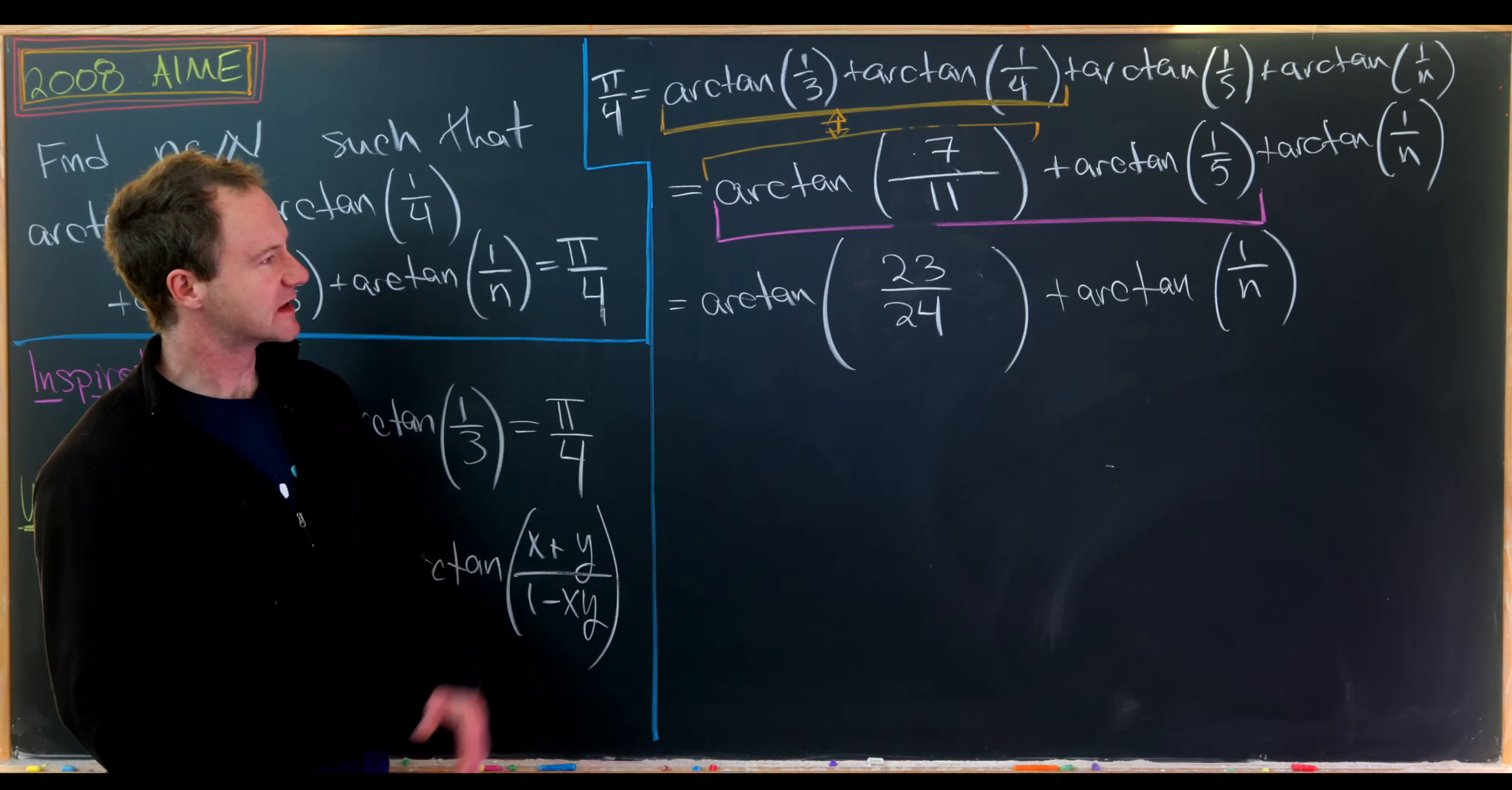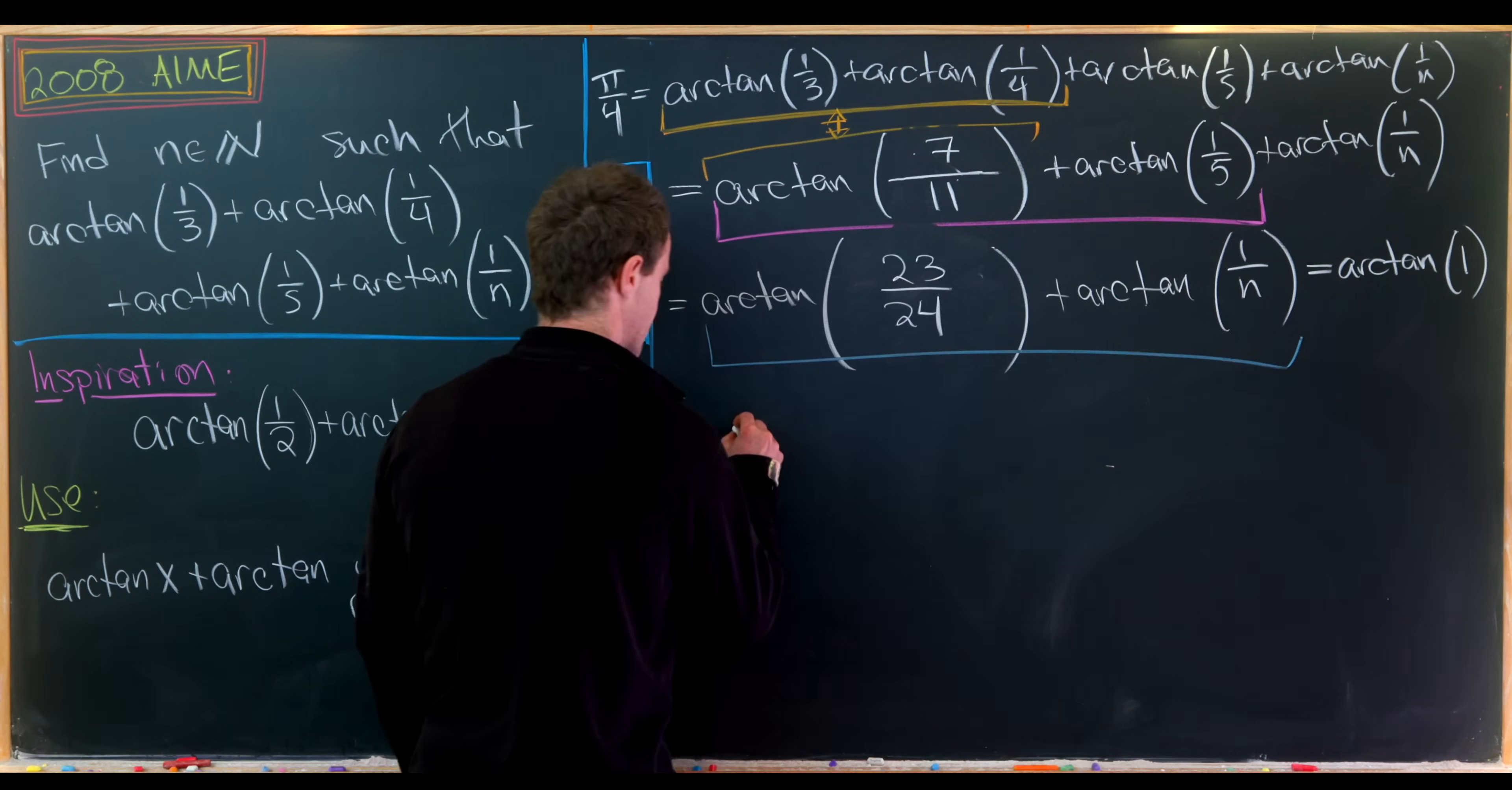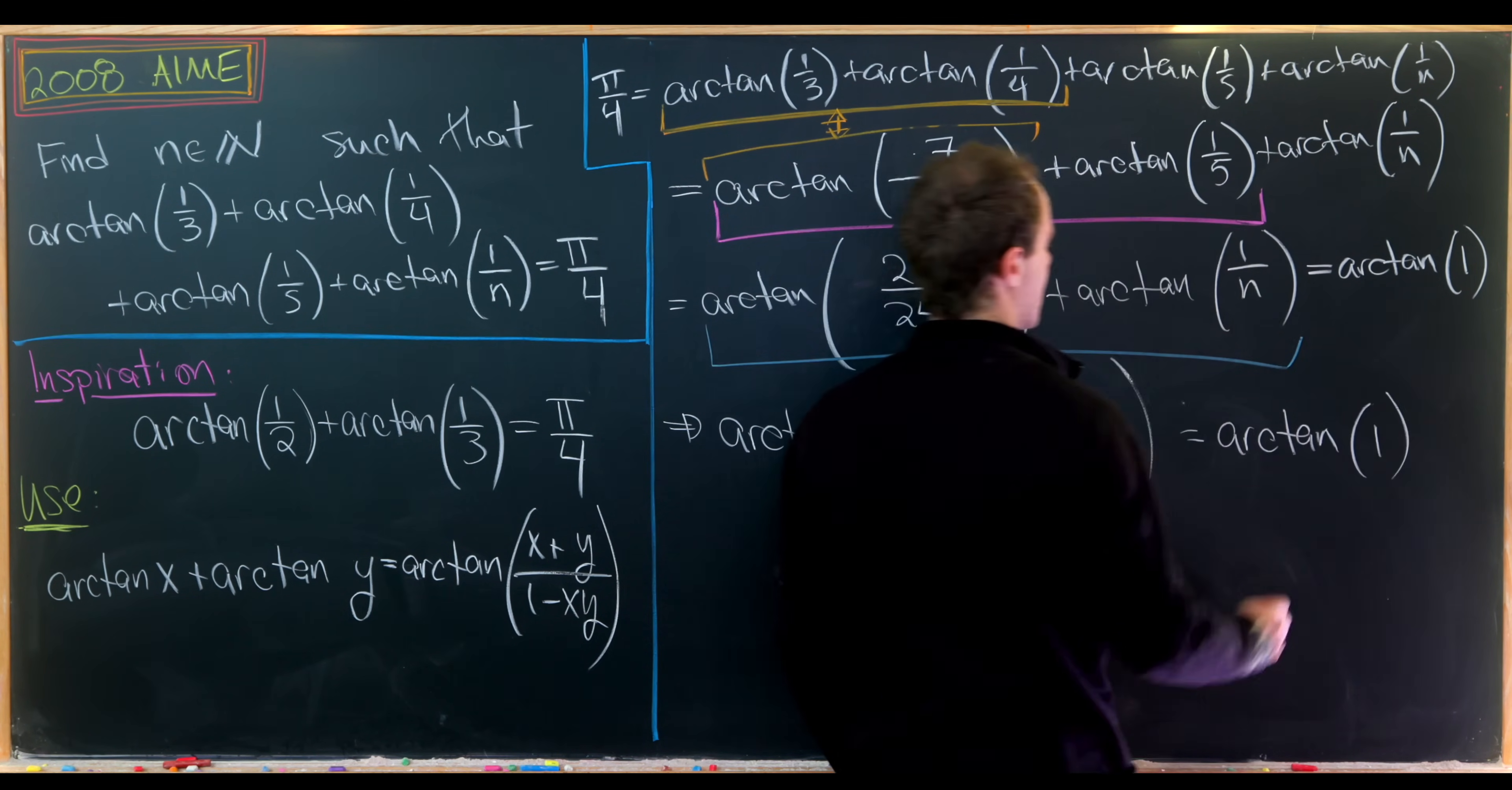Now that I've got more space, I'm going to bring this π/4 over here in a different form: the form of arctan(1). Recall that arctan(1) = π/4. Now we've got one last combination to make. The combination will be those two terms using our formula: arctan((23/24 + 1/n)/(1 - 23/(24n))). That should equal arctan(1).